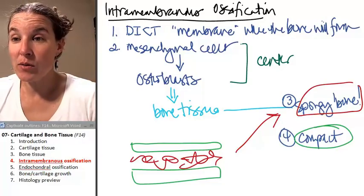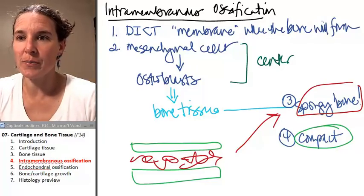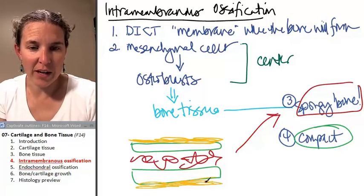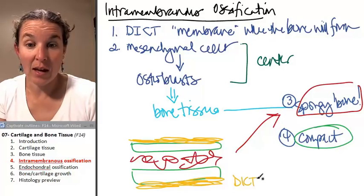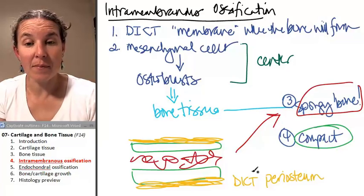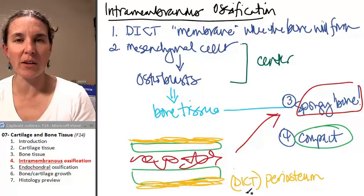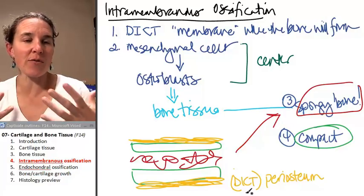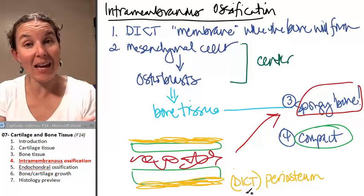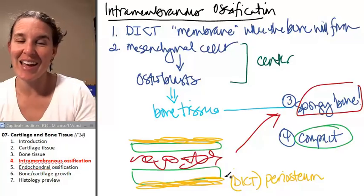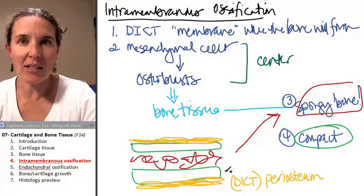One thing that I did not tell you about bone tissue, and this is also true about cartilage. Bone tissue is surrounded by a dense irregular connective tissue layer called the periosteum. So the tissue that it's made out of is dense irregular connective tissue. The structure is called the periosteum. The periosteum houses different cells that are going to help maintain and continue building and growing this bone, which originally was formed through the process of intramembranous ossification. How does that work for y'all?